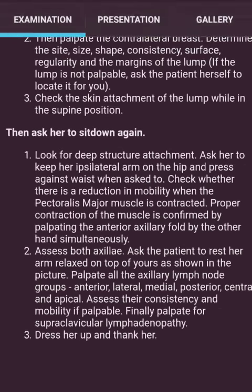If the lump is not palpable, ask the patient herself to locate it for you. Check the skin attachment of the lump while in the supine position. Then ask her to sit down again for deep structure attachment — ask her to keep her ipsilateral arm on the hip and press against the waist when asked, and check whether there is a reduction in mobility when the pectoralis major muscle is contracted. Proper contraction of the muscle is confirmed by palpating the anterior axillary fold. Then assess both axillae — ask the patient to rest her arm relaxed on top of yours. Palpate all the axillary lymph node groups: anterior, lateral, medial, posterior, central and apical. Assess their consistency and mobility. Finally palpate for supraclavicular lymphadenopathy. Dress her up and thank her.